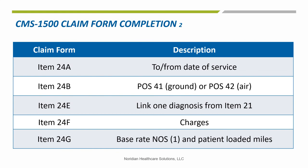More information on the claim form and box 24. Under 24A, to and from dates of service. 24B is the place of service — 41 for ground or 42 for air. Item 24D has HCPCS base and mileage rates along with appropriate modifiers on both. 24E links the diagnosis. 24F has the charges. 24G is the number of dates, equaling 1, and the number of patient loaded miles.